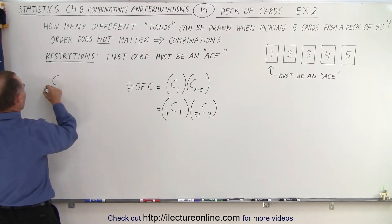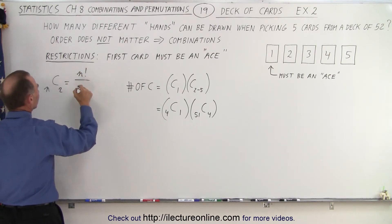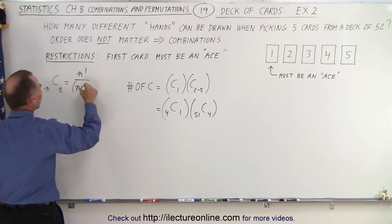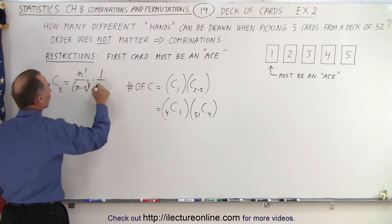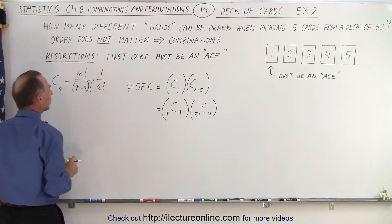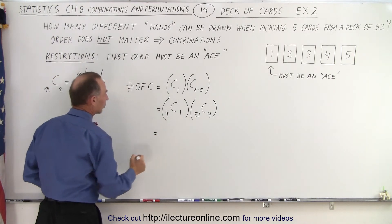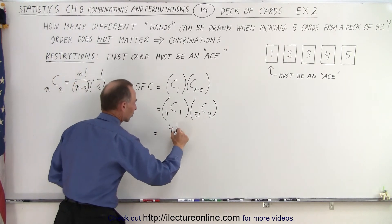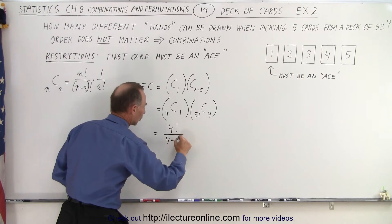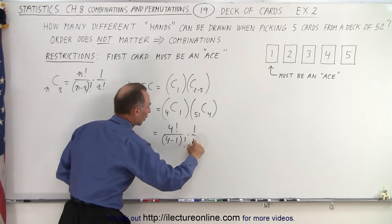The general equation is that the number of combinations of n and r is equal to n factorial divided by (n minus r) factorial, times one over r factorial. So this will be equal to: four factorial divided by (4 minus 1) factorial, times one over one factorial.